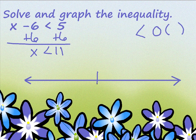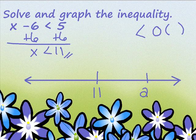To graph it, I'm going to put my 11 in the middle. Some instructors would like you to put a whole bunch of numbers on the line, but the important number is 11. Until you get good at this, I would write a number bigger than 11 — for instance, 20 — and smaller than 11 — for instance, negative 9. We're going to use them to decide which side we draw our line on for our solution.